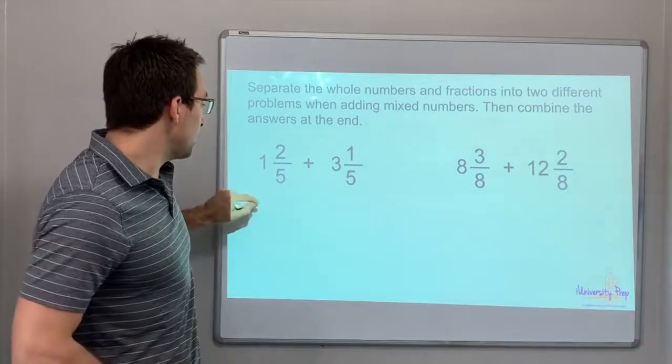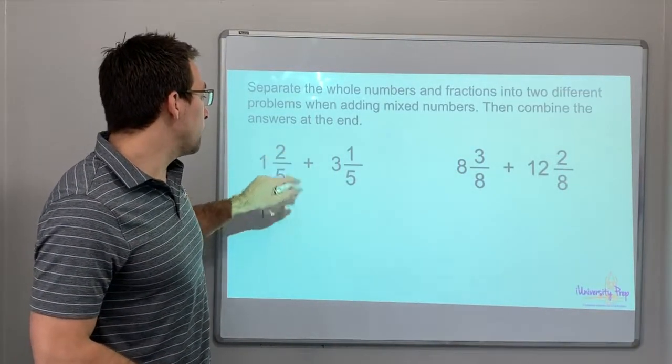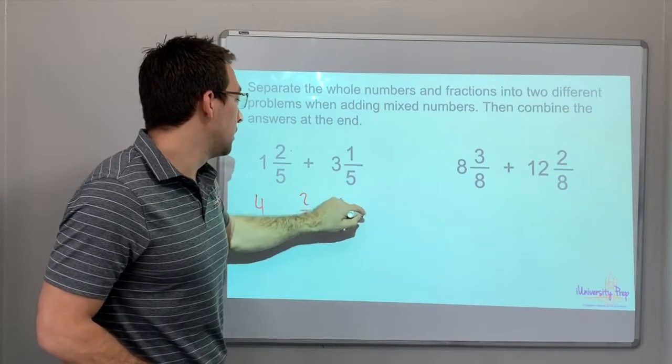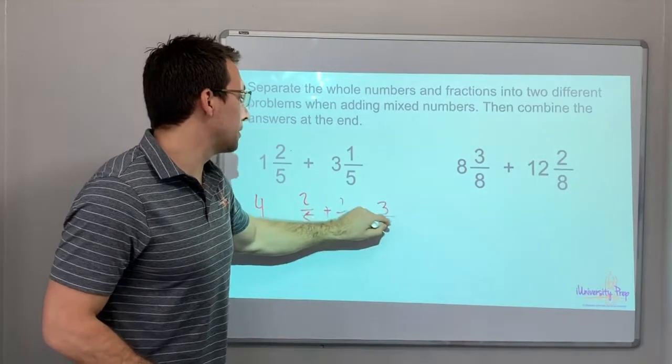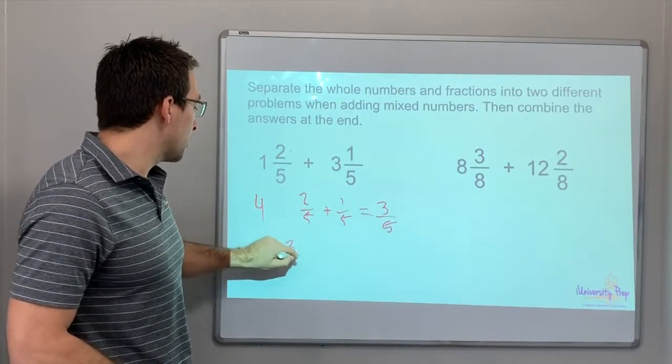So check this out. 1 plus 3 is 4, and 2/5 plus 1/5 is 3/5. So our answer is 4 and 3/5.